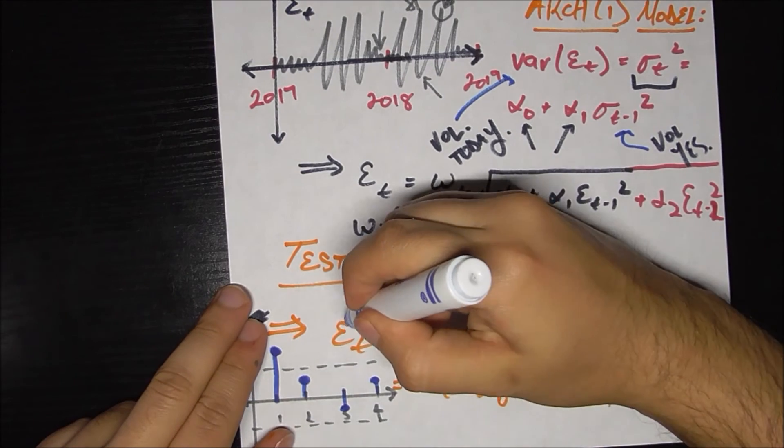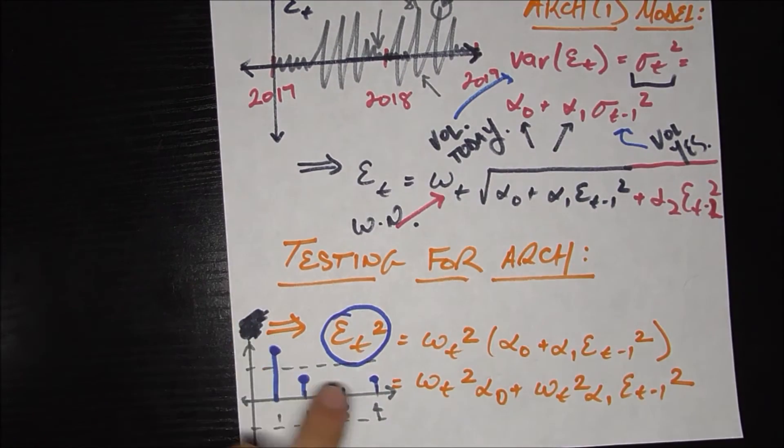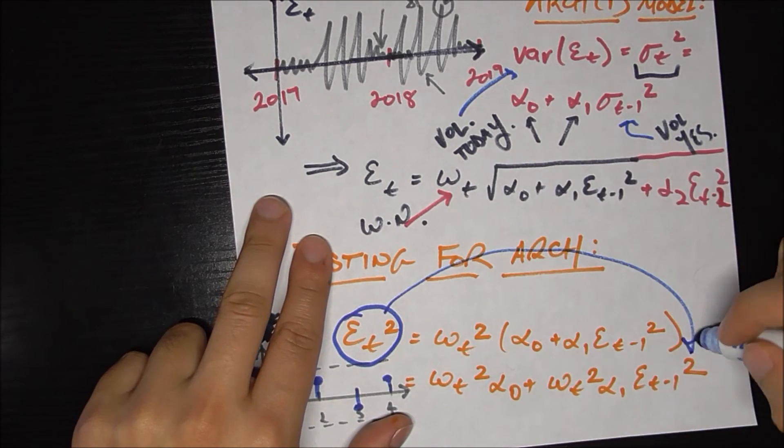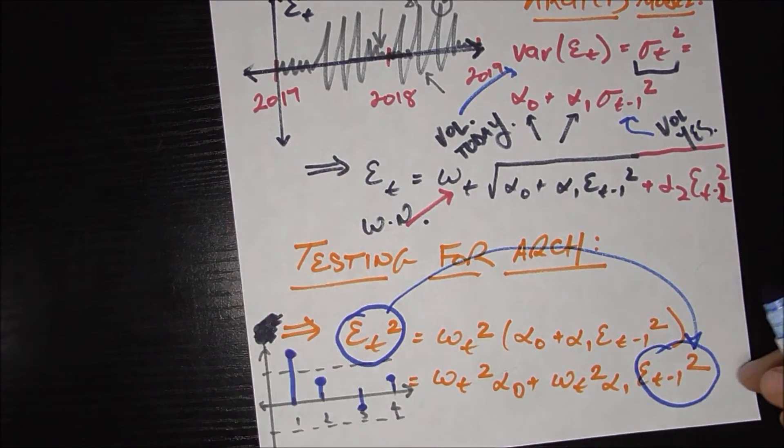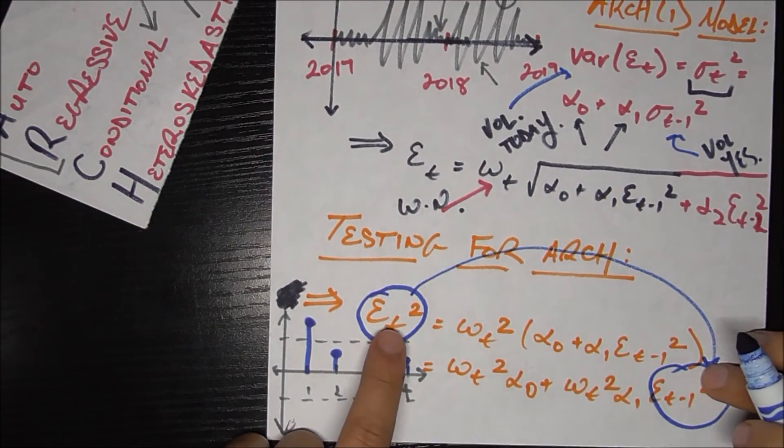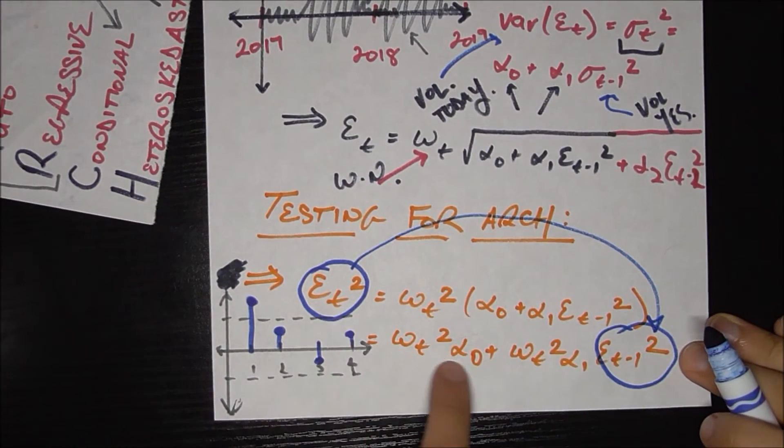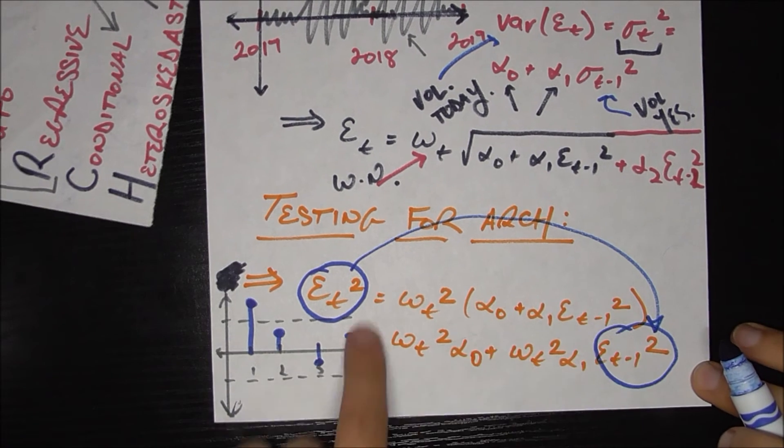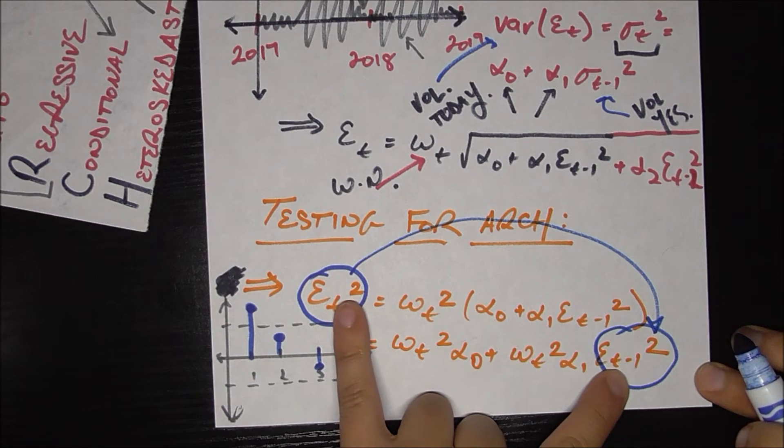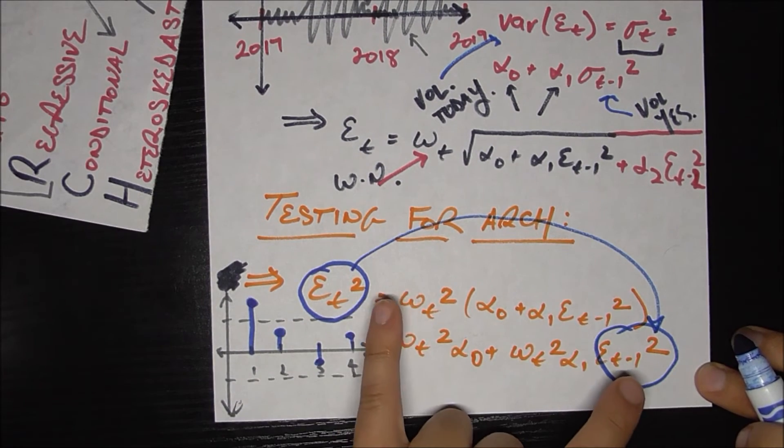And why did I expand this into a much more ugly form than I should have? Well, I just want to show you here that this is basically saying that epsilon sub t squared is a function and added a function here of epsilon sub t minus 1 squared. So here's where that autoregressive bit comes in, we're modeling the square of the error today based on some function, an autoregressive type function of the square of the error yesterday.